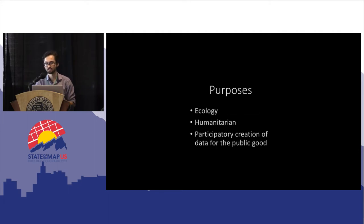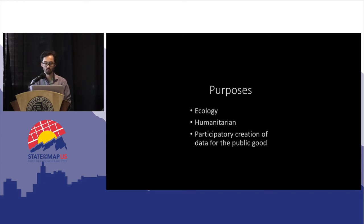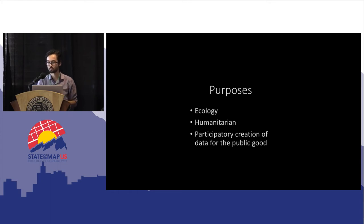As you've already seen from Nate's talk, how drones can be used and how drone mapping specifically can be used — ecology, vegetation mapping, invasive species monitoring, habitat mapping, stuff like that. Humanitarian response, of course, and in the case of Open Aerial Map, participatory creation of data for the public good.